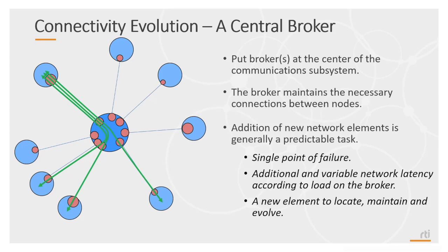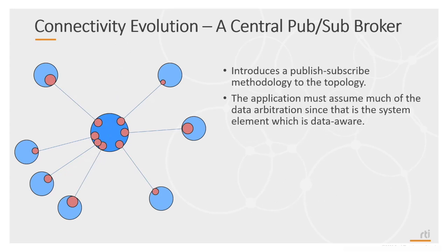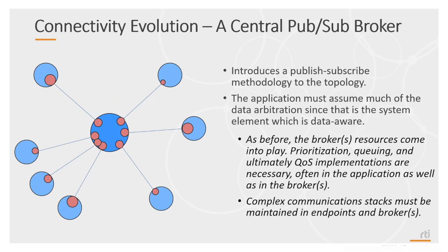As an improvement to the central broker, we have a central pub/sub broker. This negates the need for explicit connections through the broker and instead allows an easier addition of new nodes. However, this does not solve the problem of a central point of failure and requires a great deal of development in the application layer to utilize data moving through the broker.